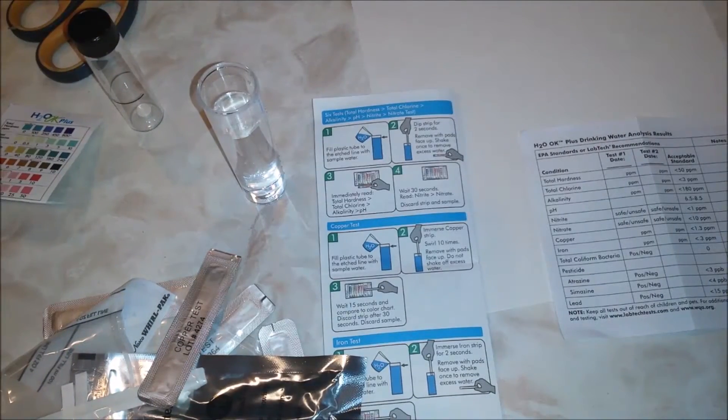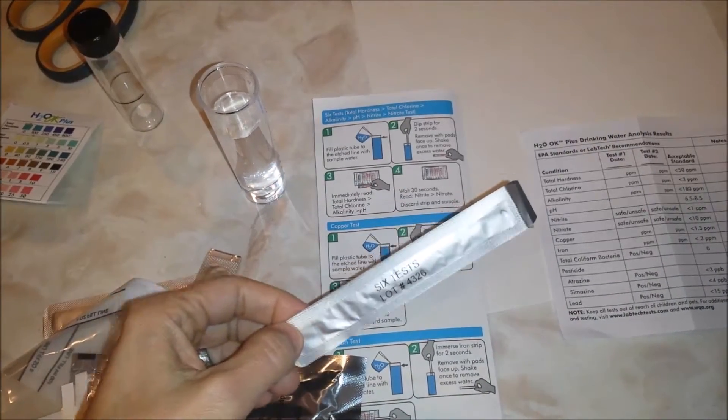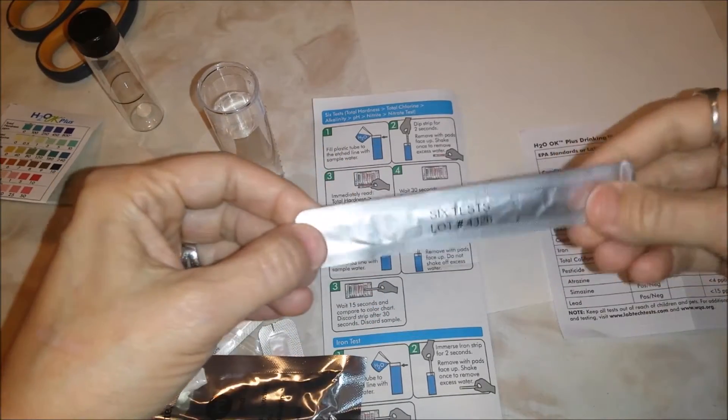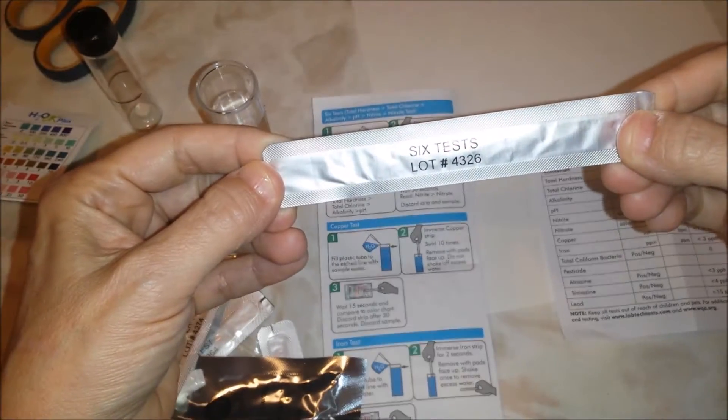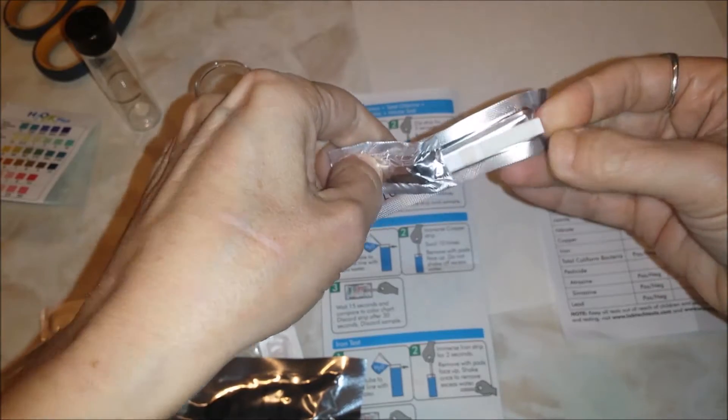Our first test tests for hardness, chlorine, alkalinity, pH, nitrite, and nitrate. I'm going to open this test strip, the one in the silver package called six test. How you open it is sort of like a band-aid - you peel the pieces apart and expose it.